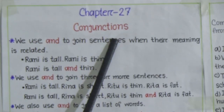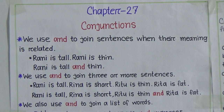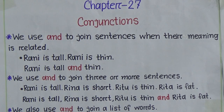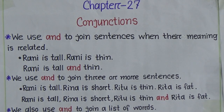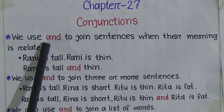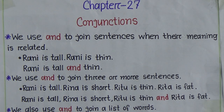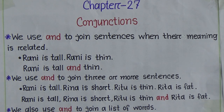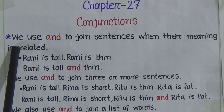Chapter 27 - Conjunctions. We'll learn about some rules of conjunctions. The words 'and', 'but', 'or', 'so', and 'because' are called conjunctions because these words connect words, sentences, or clauses.